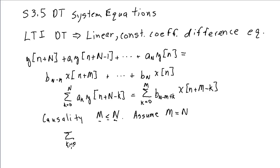This allows us to simplify the notation: a sum from K equals 0 to N of AK Y of N plus N minus K, and then a sum from K equals 0 to N. Some of the leading BK terms may actually be 0. This is known as the advance form of the difference equation.